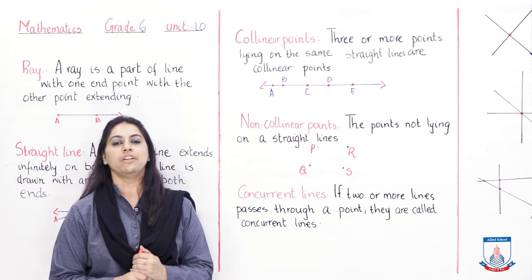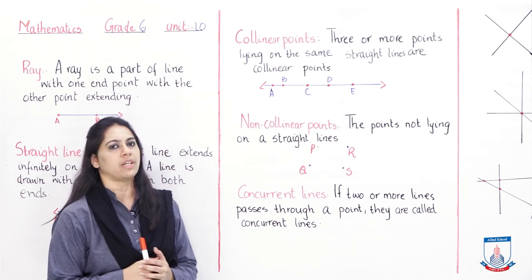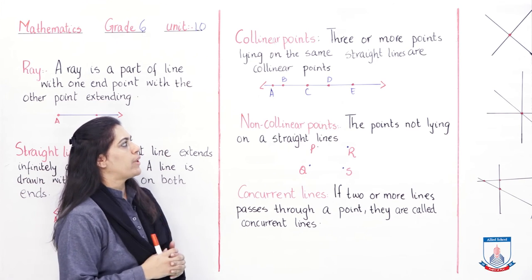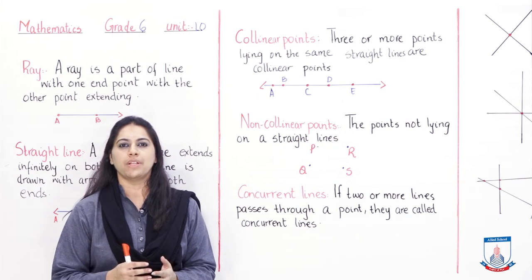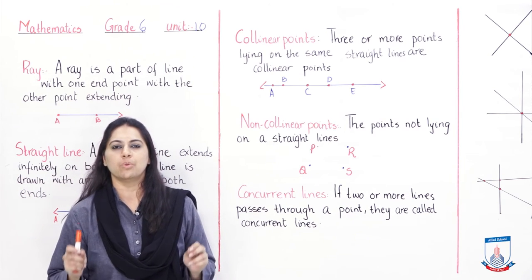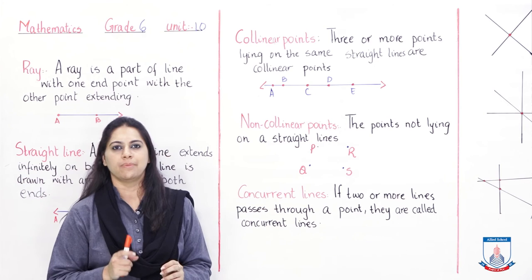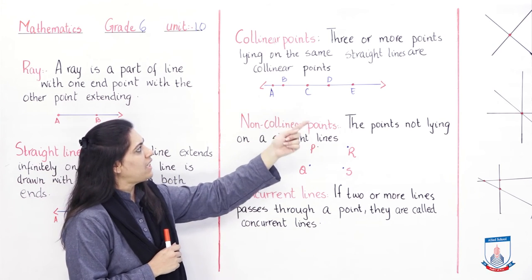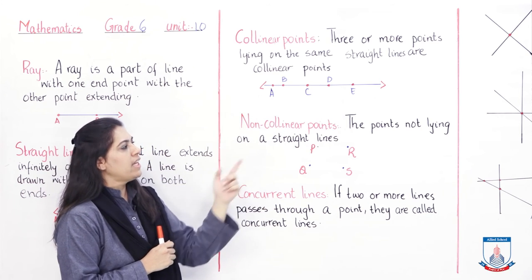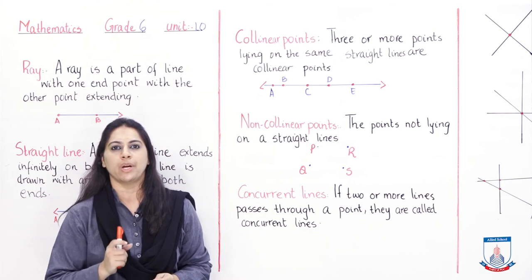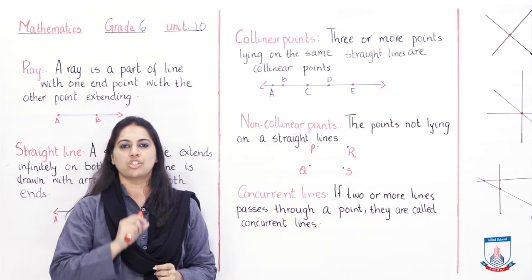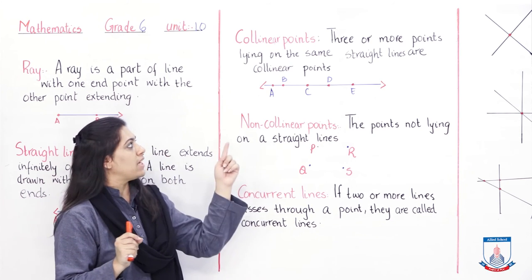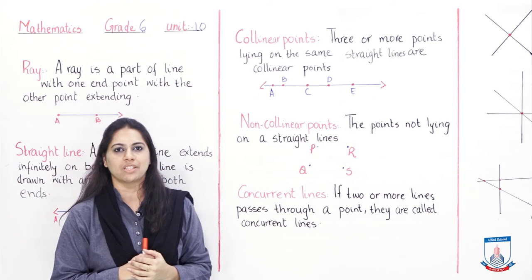Next are collinear points. Three or more points lying on the same straight line are called collinear points. As you can see in the diagram, there is a straight line with points A, B, C, D, E on it - these are called collinear points. Collinear points are always on a straight line. This is a good example of collinear points.